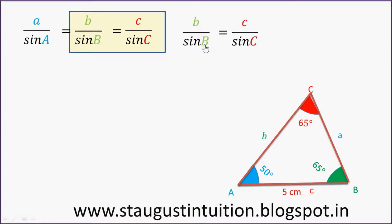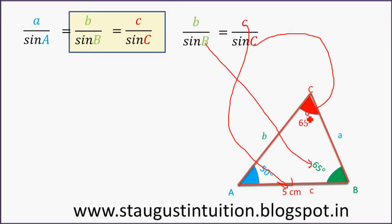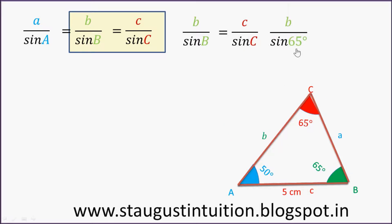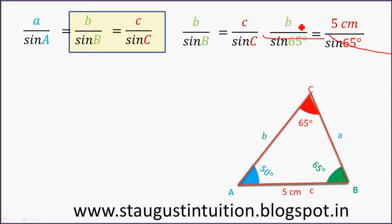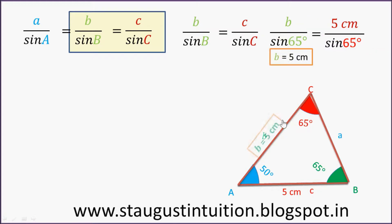Capital B is equal to 65 degrees, small letter c is equal to 5 cm, and capital C is equal to 65 degrees. Applying the Law of Sines, we find that side b is equal to 5 cm.